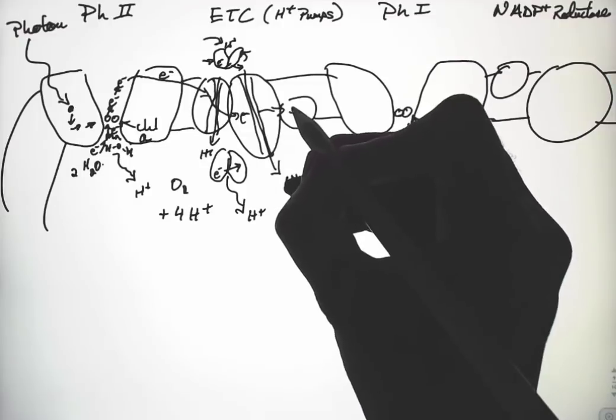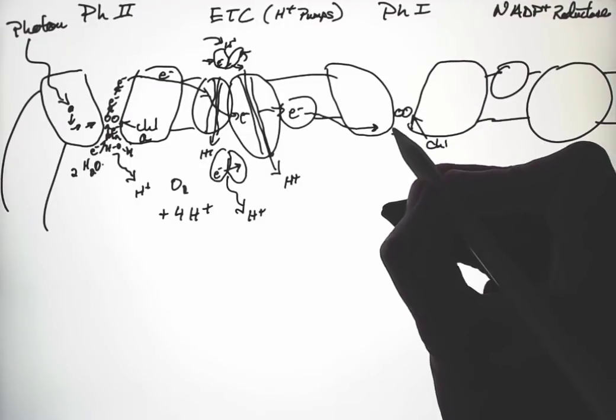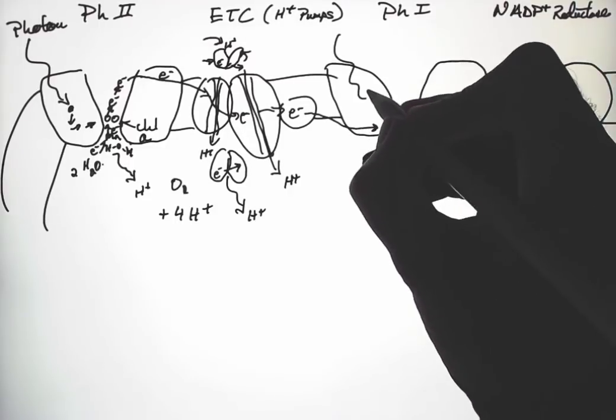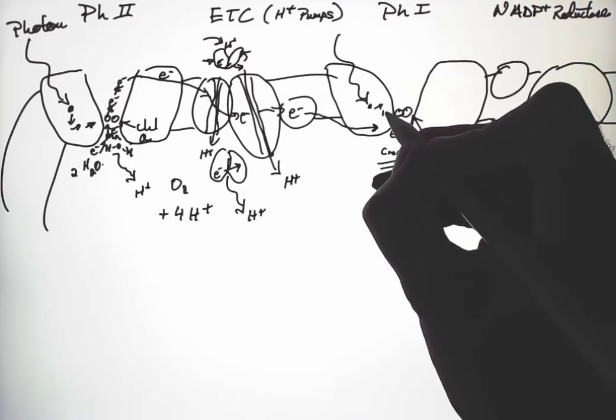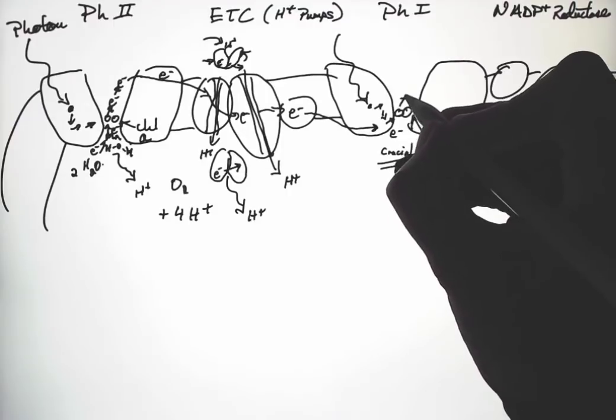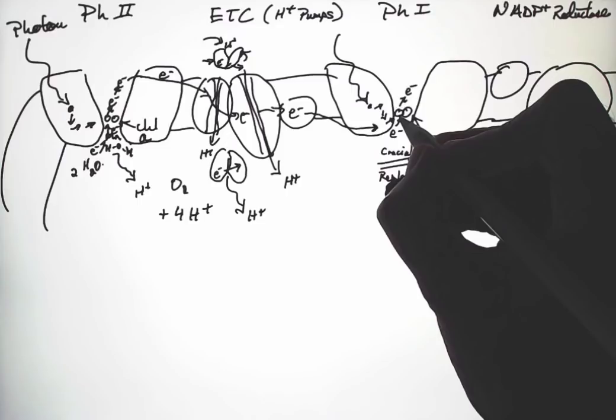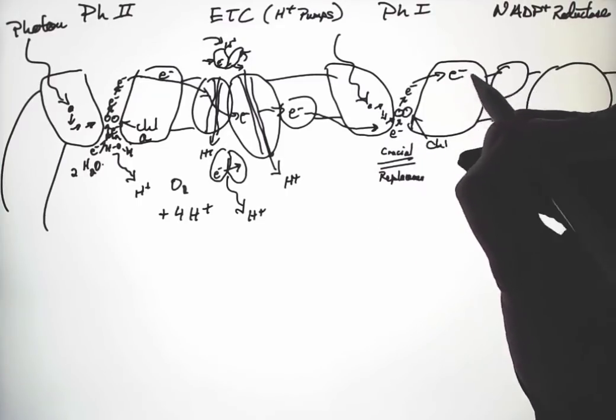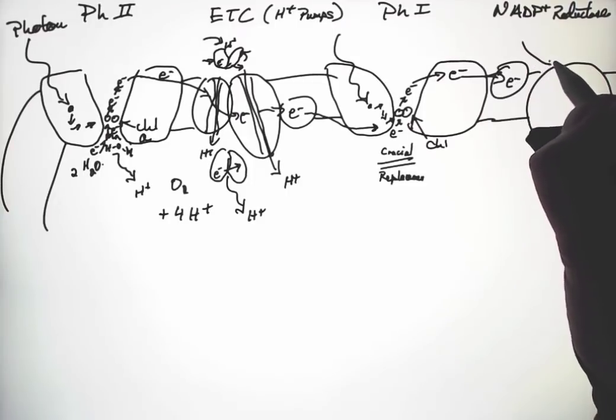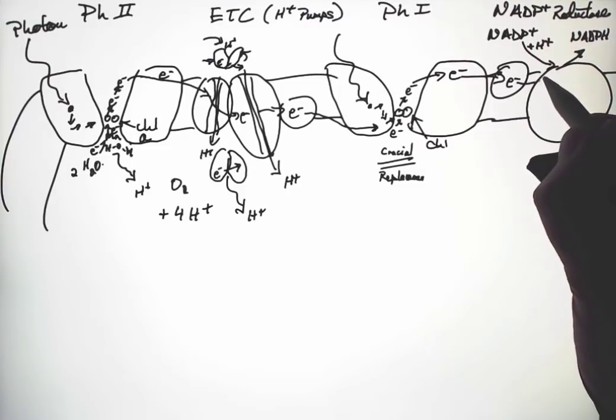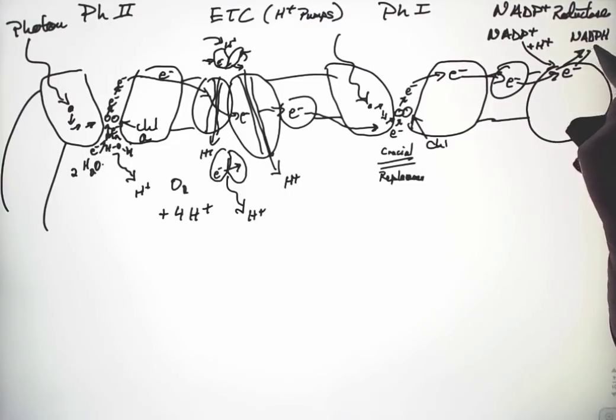That electron is continued on through electron transport to photosystem I, where it is held in place. Crucial step: when a photon excites one of these chlorophylls in the middle, an electron jumps and is taken away. It has to be replaced by this electron coming in from electron transport. The electron is transferred over to NADP+ reductase, where NADP+ with H+ gets that electron. The electrons then go into NADPH, and that is necessary for the Calvin cycle.